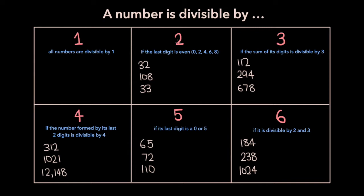A number is divisible by 2 if its last digit is even — that is, if its last digit is one of 0, 2, 4, 6, or 8. The last digit in 32 is 2, which is even, which makes 32 divisible by 2. The last digit in 108 is 8, which means 108 is divisible by 2 as well. And the last digit in 33 is 3, which is not even, and so 33 is not divisible by 2.